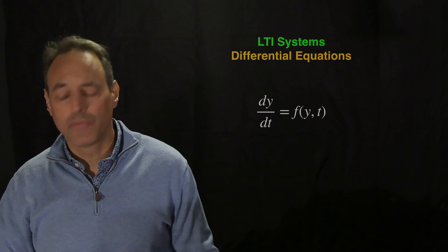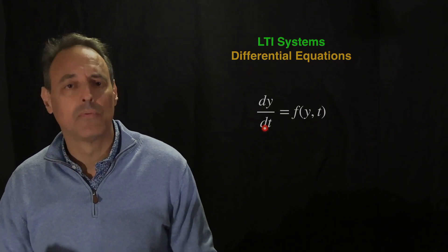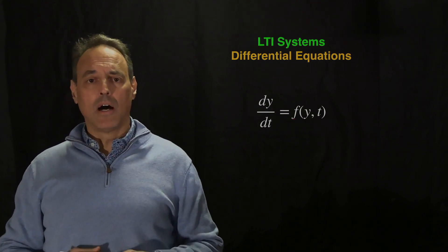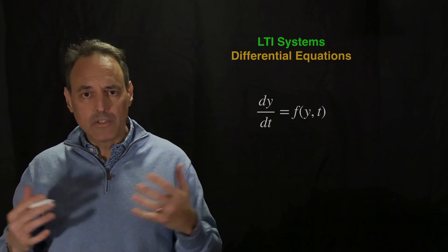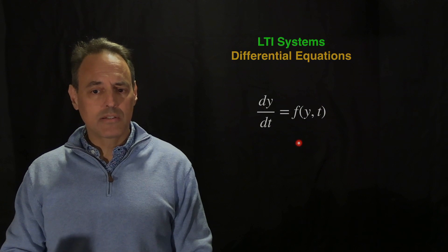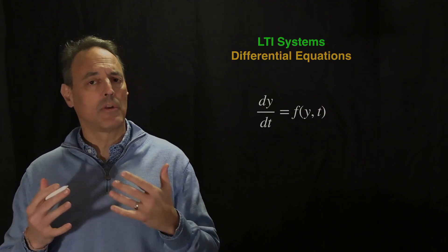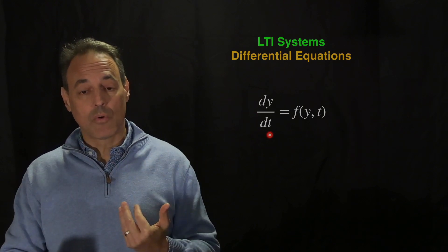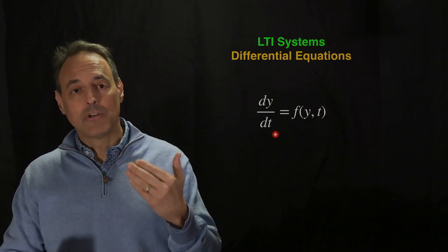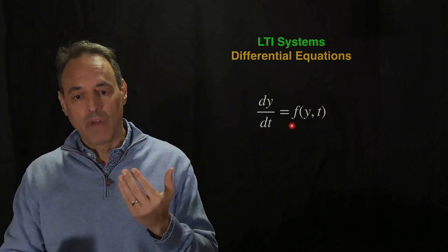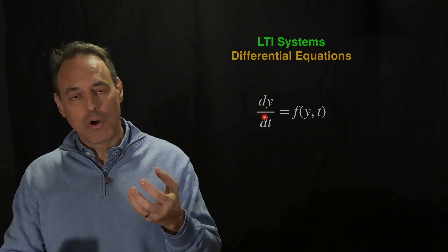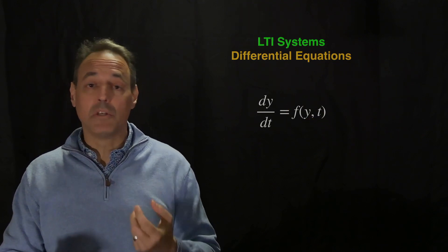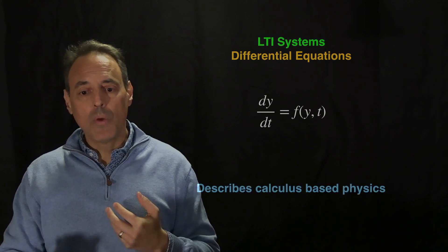Differential equations can generically be written in the form dy/dt equals some f. Now f itself can be quite a broad range of types of functions — in general this is nonlinear. There is typically an associated initial condition, so we start off with some initial condition and evolve it forward, which basically tells you some relationship through f between how this quantity is changing in time related to the function itself.